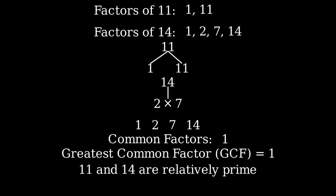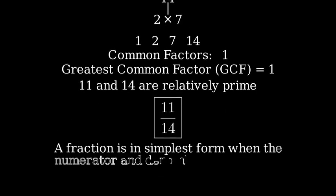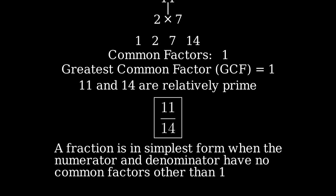Therefore, 11 fourteenths cannot be simplified any further. Our final answer is 11 fourteenths. To verify this is correct, remember, if we can't find any numbers that divide evenly into both the numerator and denominator.